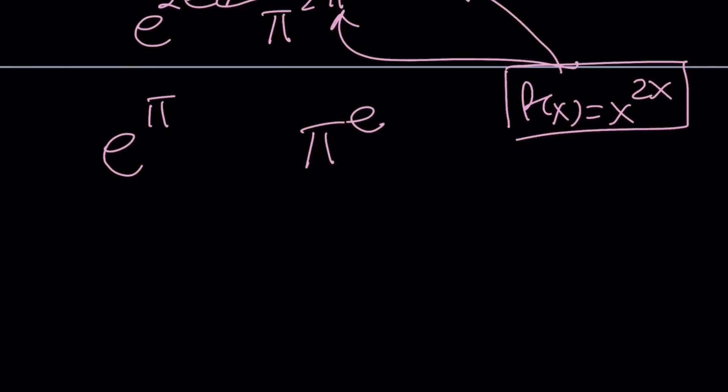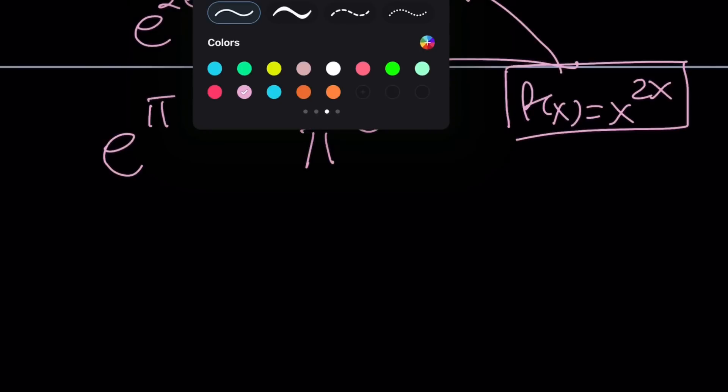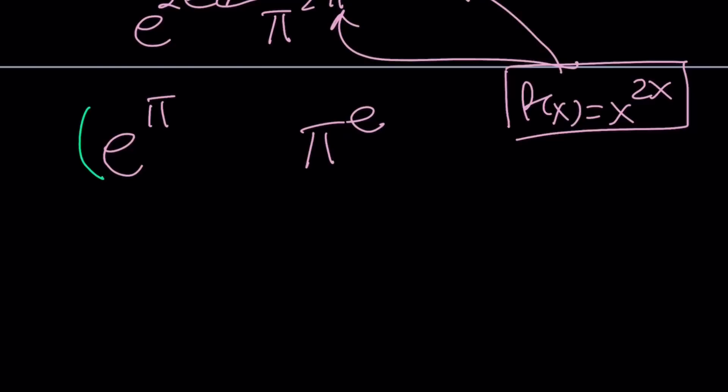One thing you can do is basically raise both sides to the power something. For example, I can go ahead and raise both of these numbers to the power 1 over πe. And let's see how that's going to help. Obviously, πe is well defined. It's a real number. 1 over πe is also well defined. So we can raise both sides to this power.